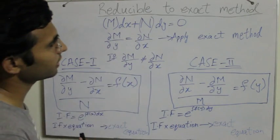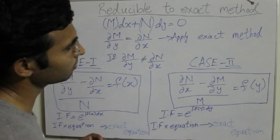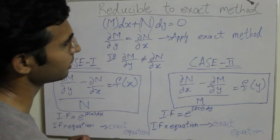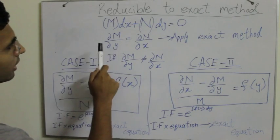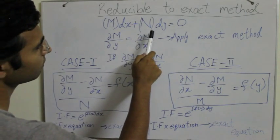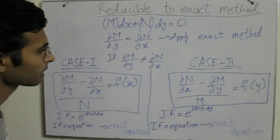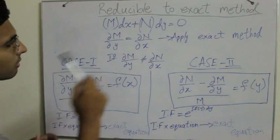Now we usually solve these kinds of differential equations by exact method, but the condition for an exact method is that the partial derivative of M with respect to y is equal to the partial derivative of N with respect to x. Now when these are not equal, here comes the problem.